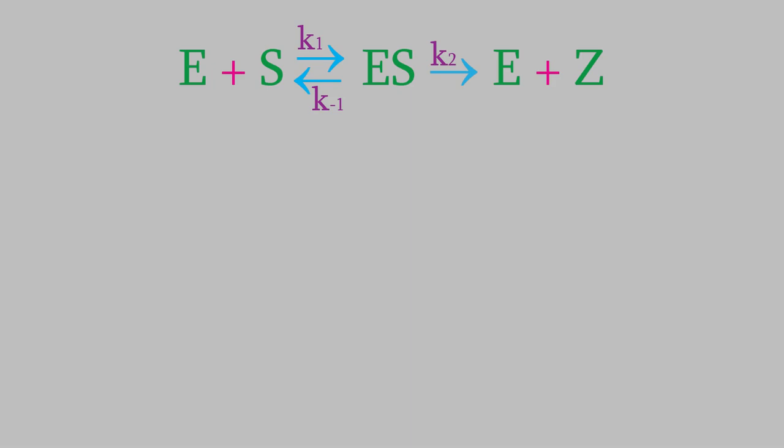As with any reaction, we're most interested in how quickly the products are formed, so let's write the rate law with respect to the products, Z. This is a pretty simple rate law because Z is only involved in one reaction. The rate is equal to K2 times ES. And now you can see why we did all that work to get an expression for ES.